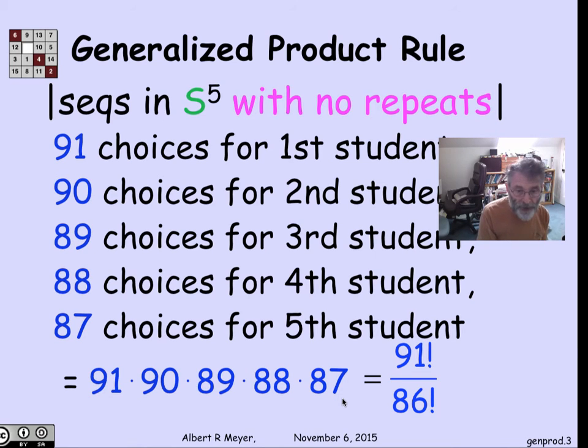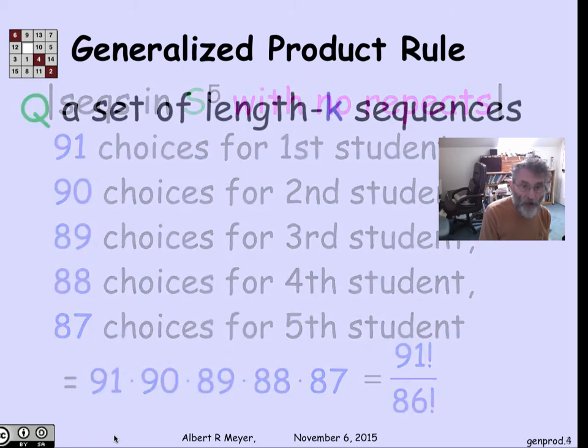A convenient way to say this more concisely in terms of factorial is 91 factorial divided by the numbers 1 to 86, which cancels out everything smaller than 87. It's just the product of n times n minus 1 down to n minus 5.